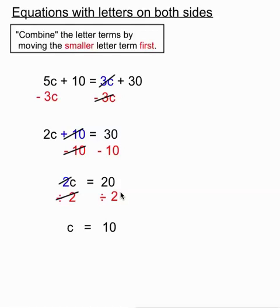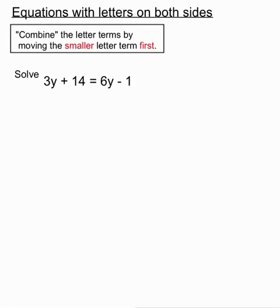We've started off by moving the smaller letter term first. After we've done that carefully we're just faced with a normal two-step equation. The second example is a little different but nothing to be too concerned about. We're solving this equation: 3y plus 14 equals 6y minus 1.